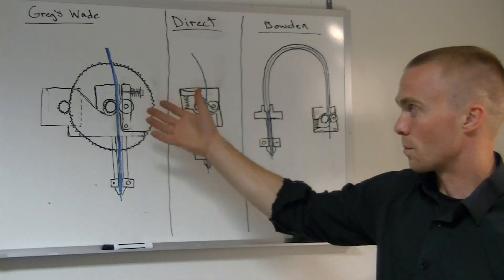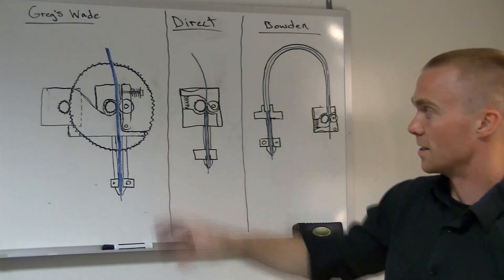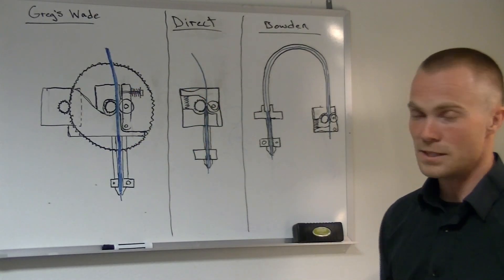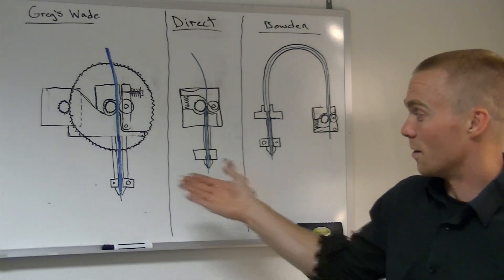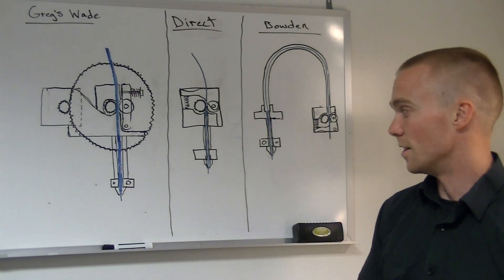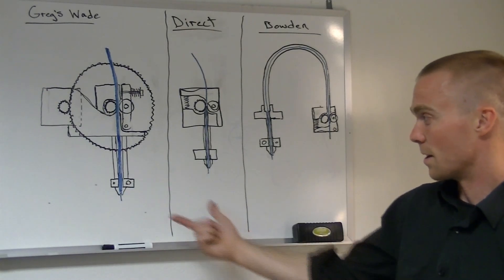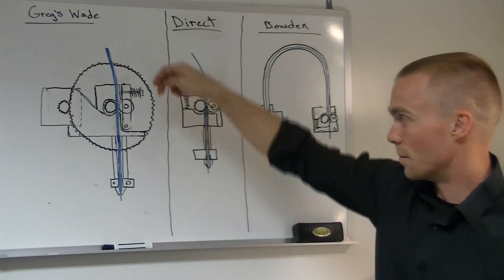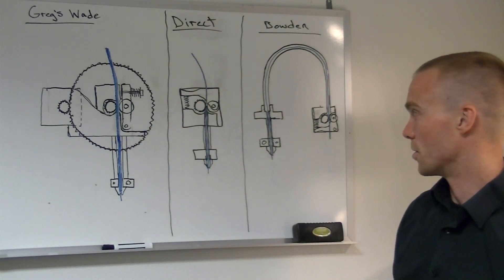So you get a torque multiplier out of this, this gear reduction so that you can create a much larger force on the filament and the reason you need that force is in order to generate the same pressure in the hot end and get the same kind of flow out of the similar size nozzle, you need a much larger force on the filament to get that pressure.